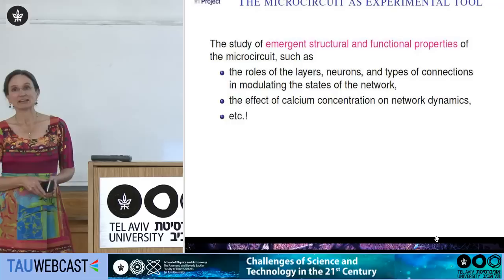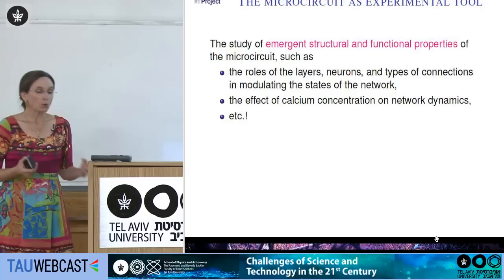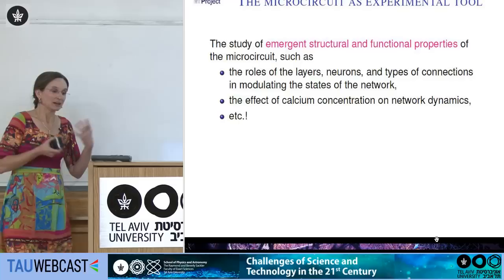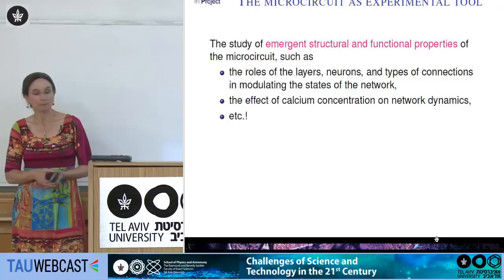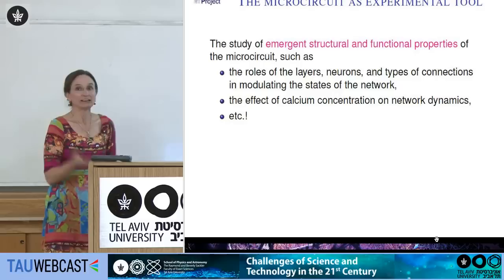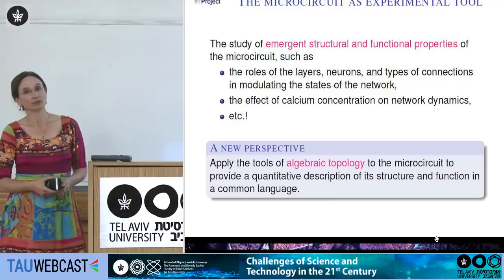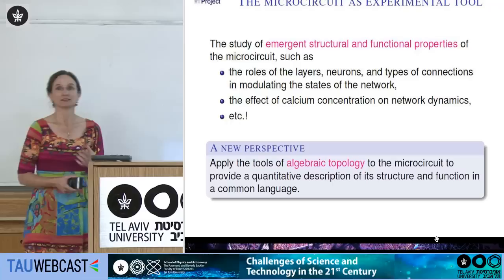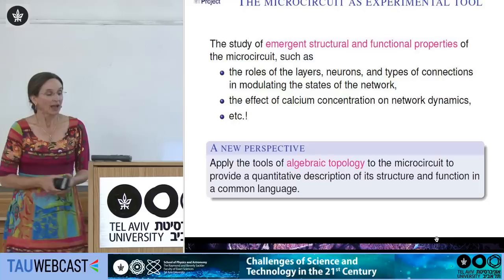One observation made is that if you change the calcium concentration in the cerebrospinal fluid, this dramatically changes the network dynamics. When calcium concentration is too low, neuron firing is very sporadic and chaotic. When it's too high, all neurons sort of march together — more like epilepsy. You need to be at a sweet spot in the calcium concentration to have your network really ready to learn. My team and I are using tools of algebraic topology to quantify both the structure and the function of these microcircuits with a common language.